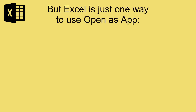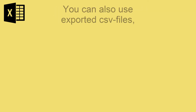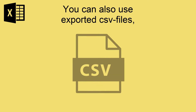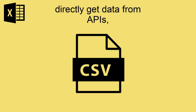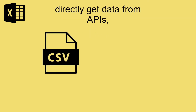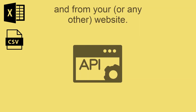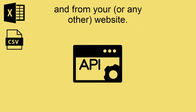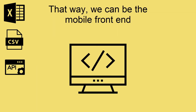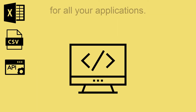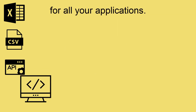But Excel is just one way to use OpenASAP. You can also use exported CSV files, directly get data from APIs and from your or any other website. That way we can be the mobile frontend for all your applications.